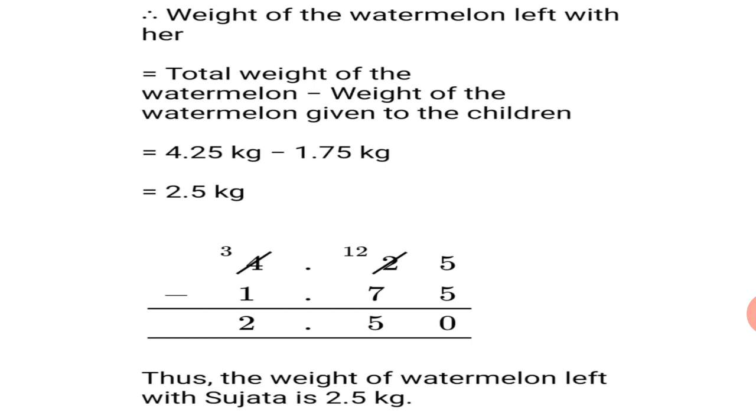So, now we will subtract. Weight of the watermelon left with her is equal to total weight of watermelon minus weight of the watermelon given to the children. Which is equal to 4.25 kg minus 1.75 kg is equal to 2.5 kg. So, you can say that the weight of watermelon left with Sujata is 2.5 kg.